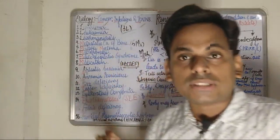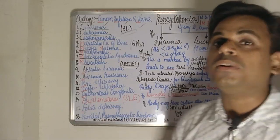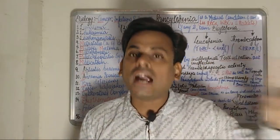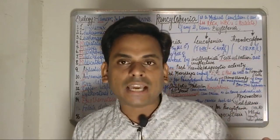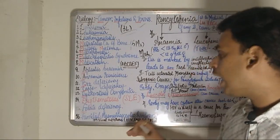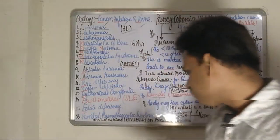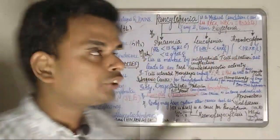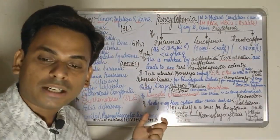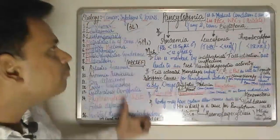Last but not least, there are certain viral infections that can ultimately lead to pancytopenia. These viral infections are specifically the HIV virus and the Epstein-Barr virus. This concludes the short discussion about the etiology and the mnemonic for remembering the etiological factors of pancytopenia.